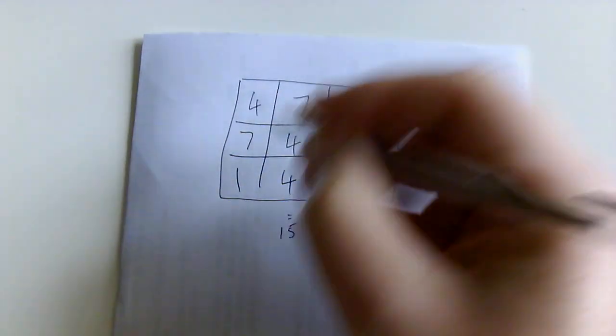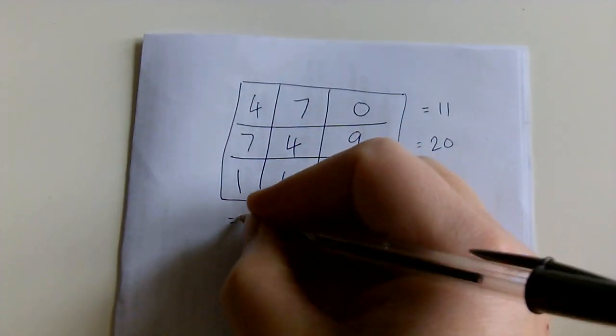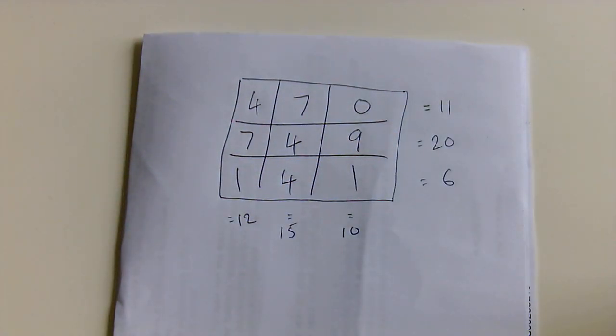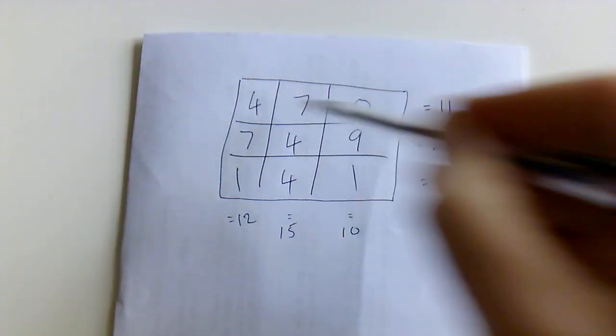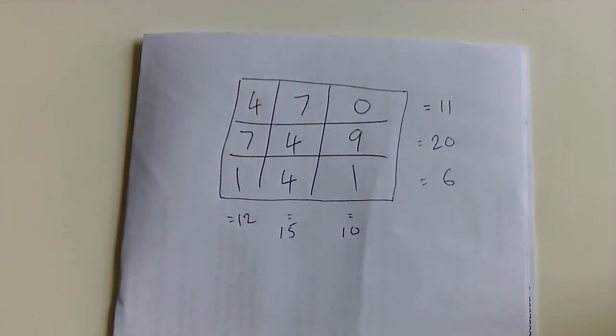7 and 4 and 4 equals 15. And 7 and 4 is 11, and 1 equals 12. So as you can see there, we have got 6 answers to adding up the rows and the columns. None of those add up.